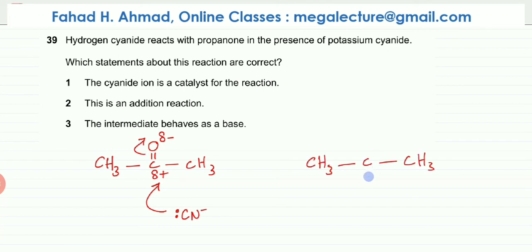So in the next step, what would happen is that the CN would bond with the carbon atom. And the double bond electrons are going to be repelled further up. So the oxygen is going to get a negative charge over here. And this would be your intermediate.